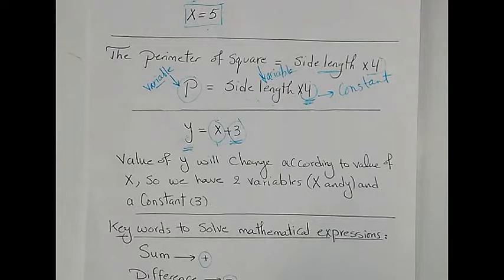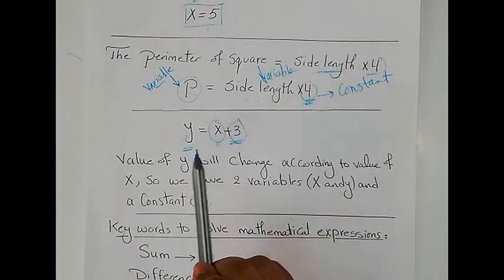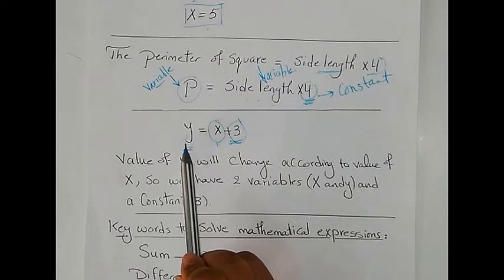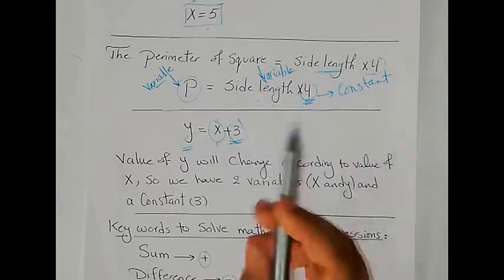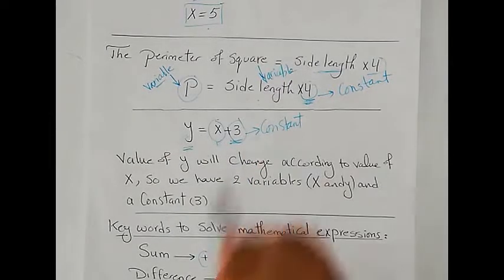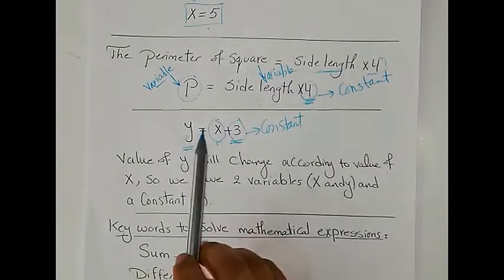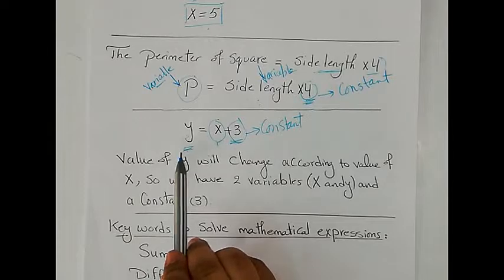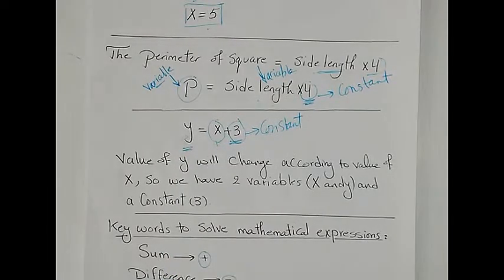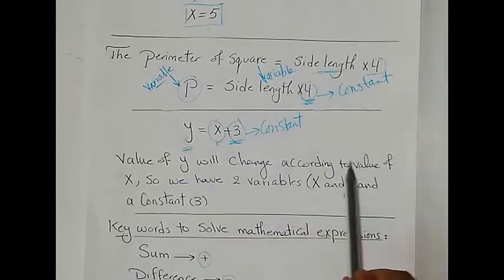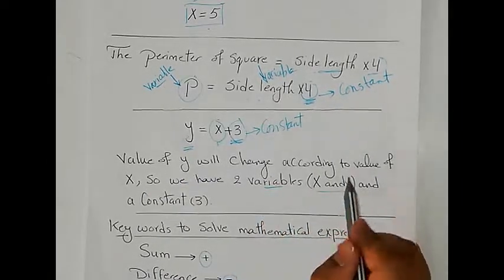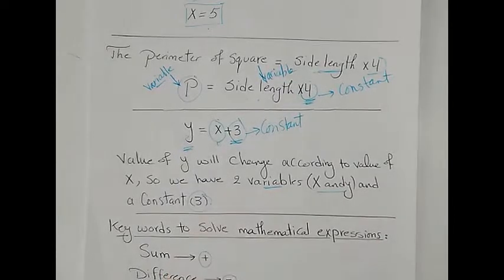Another example with two variables: if Y equals X plus 3, we have two variables, Y and X, and one constant, which is 3. The value of Y will vary according to the value of X. So Y and X are the two variables, and 3 is the one constant.